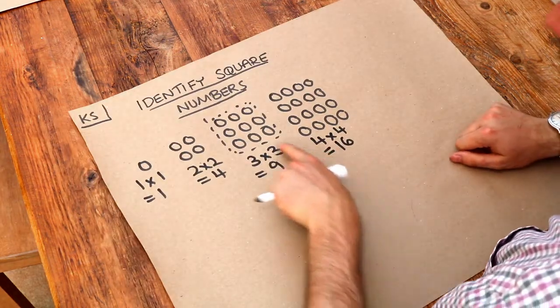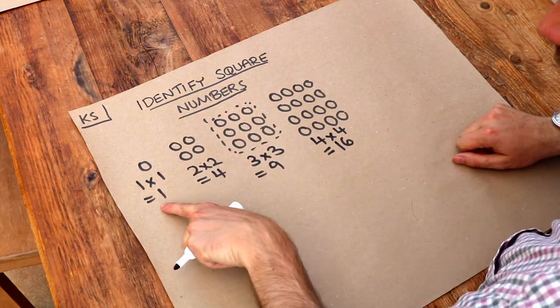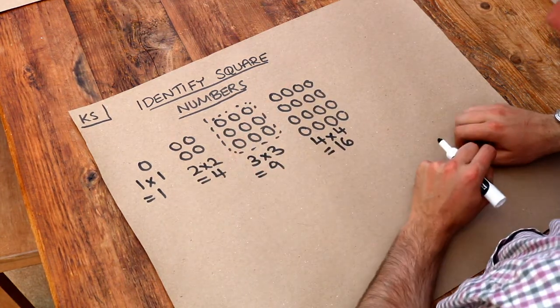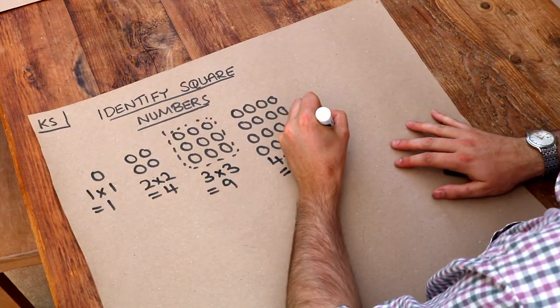And because these dots form square shapes, we say that one, four, nine, sixteen are square numbers. So these are square numbers.